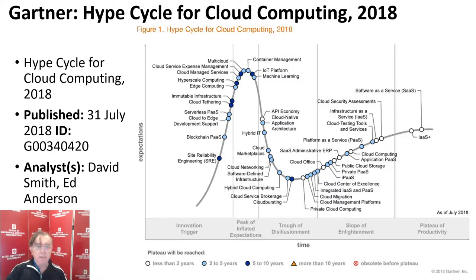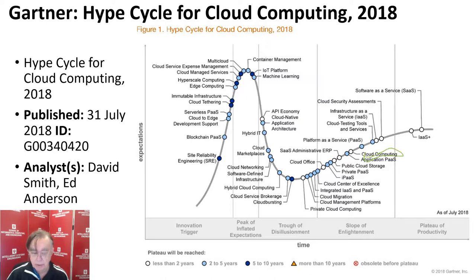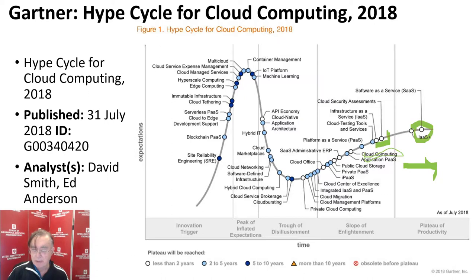Here's yet another hype cycle, this one for cloud computing — and it actually has cloud computing on the hype cycle itself. In some of these hype cycles cloud computing is included, in some it's not. Here it's pretty near the plateau of productivity, just halfway through the slope of enlightenment. If we have classic cloud computing things — infrastructure as a service, software as a service, platform as a service — these are all pretty mature, not so exciting.